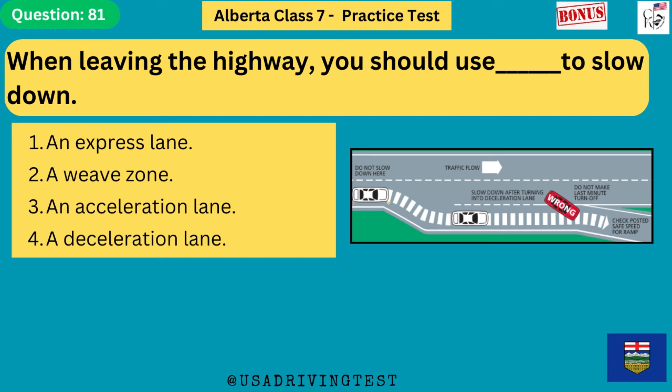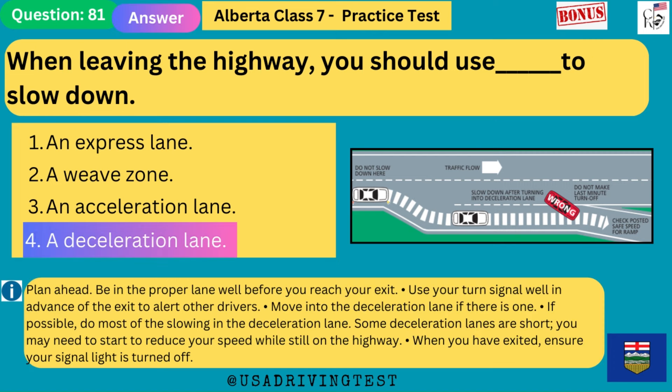When leaving the highway, you should use what to slow down? 1. An express lane. 2. A weave zone. 3. An acceleration lane. 4. A deceleration lane. The answer is 4: a deceleration lane. Plan ahead — be in the proper lane well before you reach your exit. Use your turn signal well in advance. Move into the deceleration lane if there is one, and do most of the slowing there. Some deceleration lanes are short, so you may need to start reducing speed while still on the highway. When you have exited, ensure your signal light is turned off.